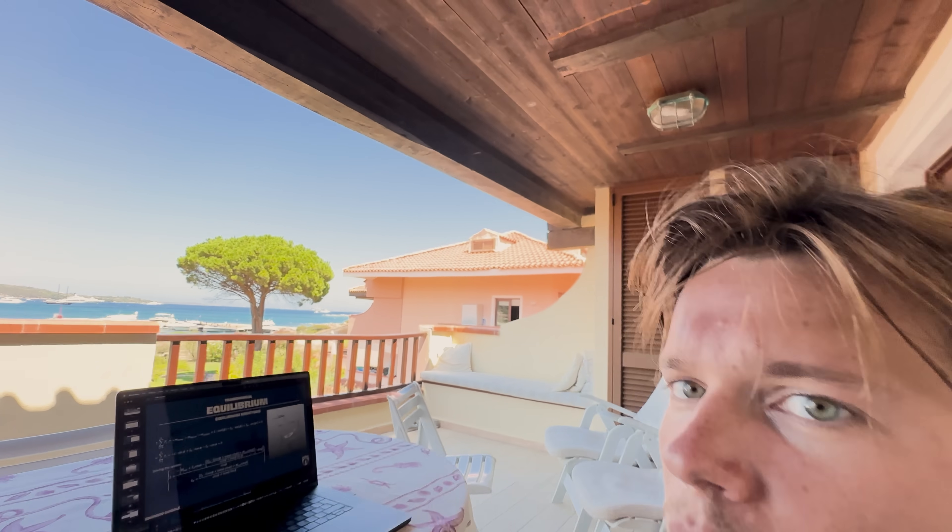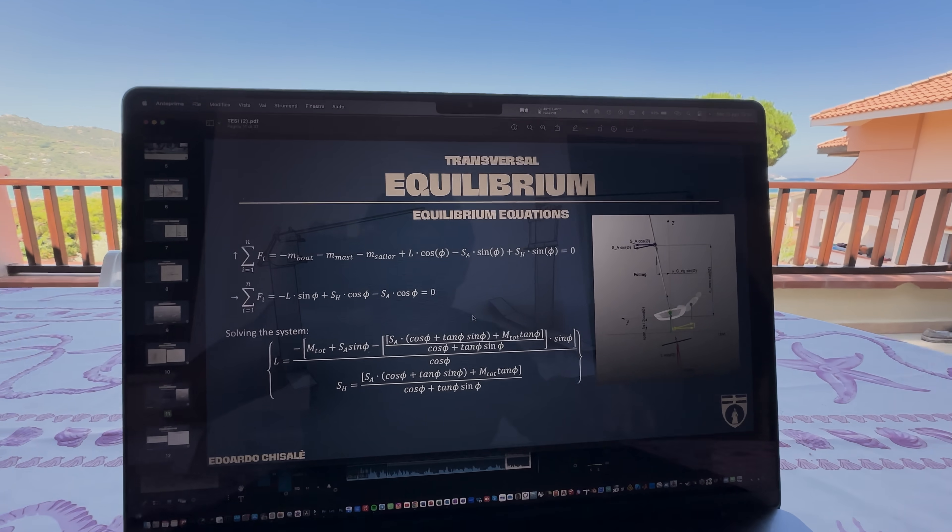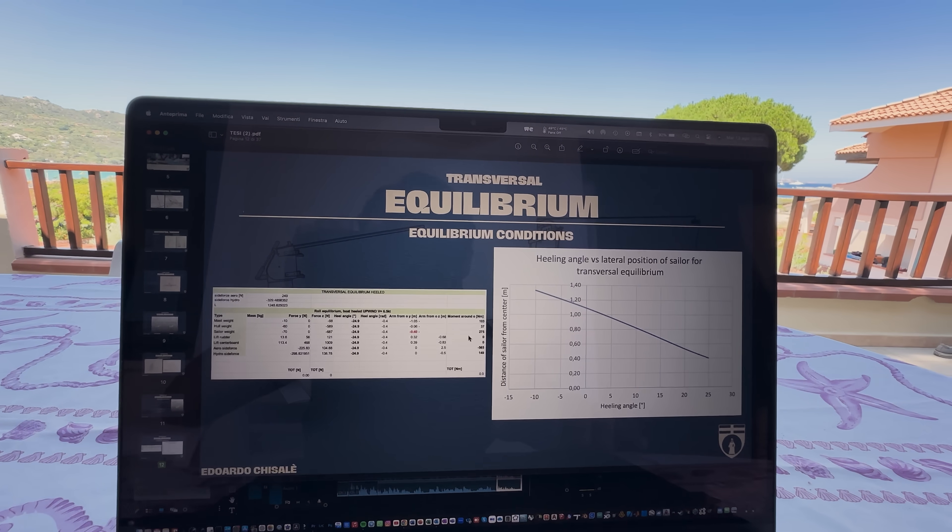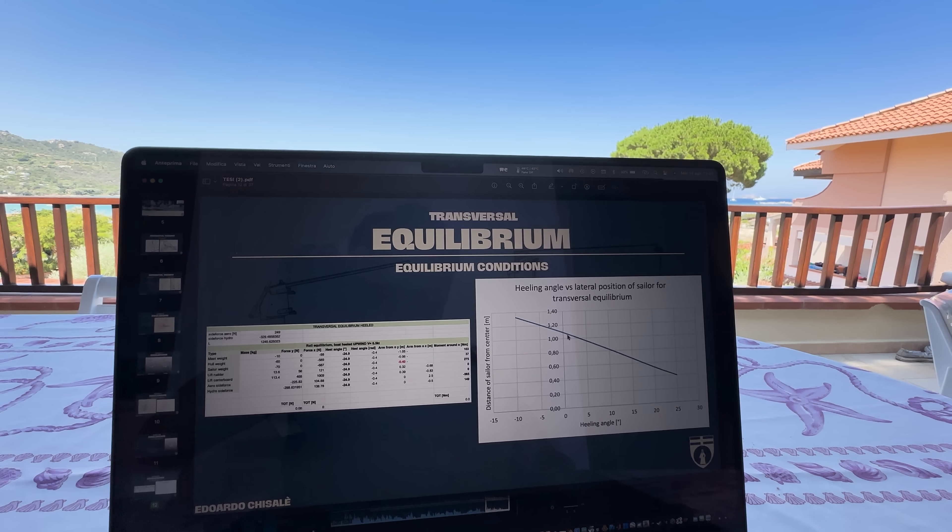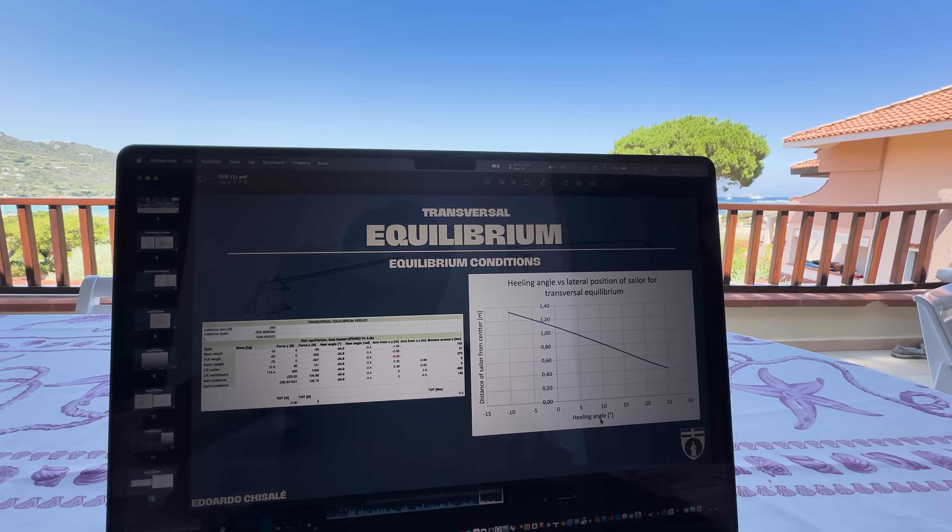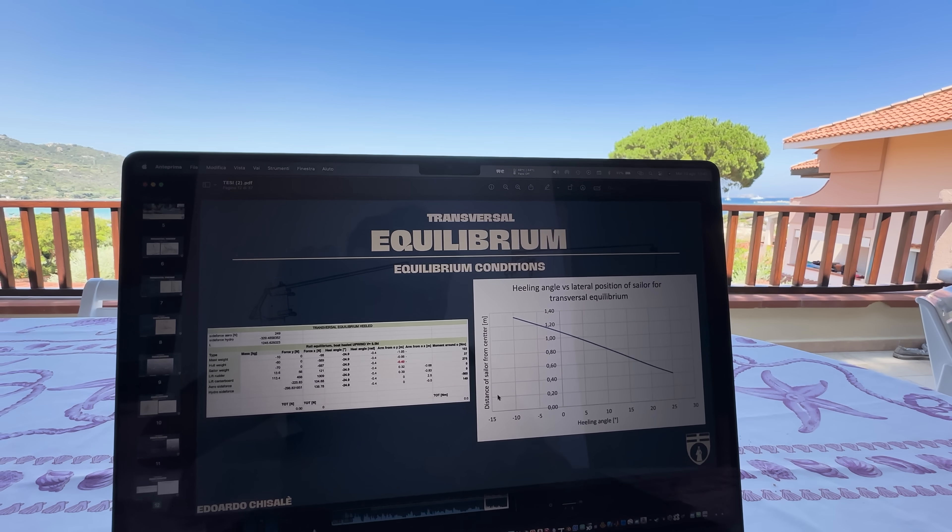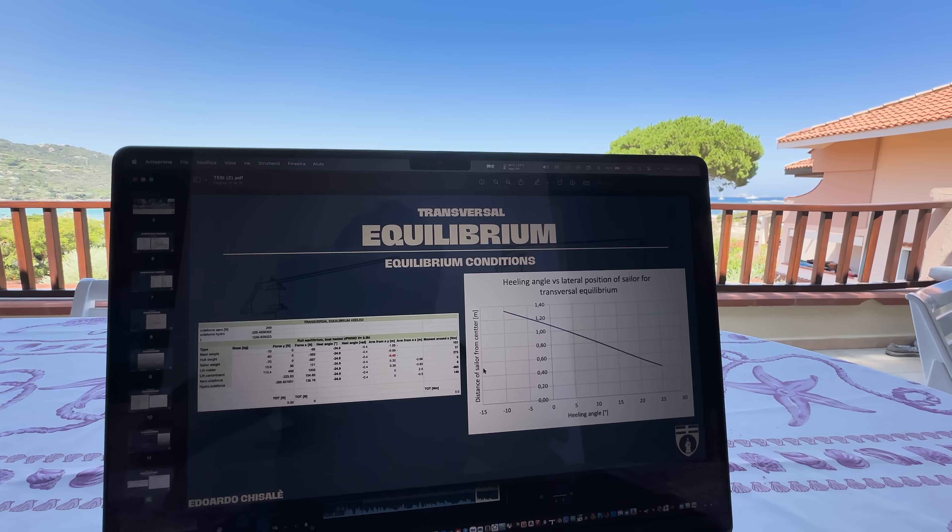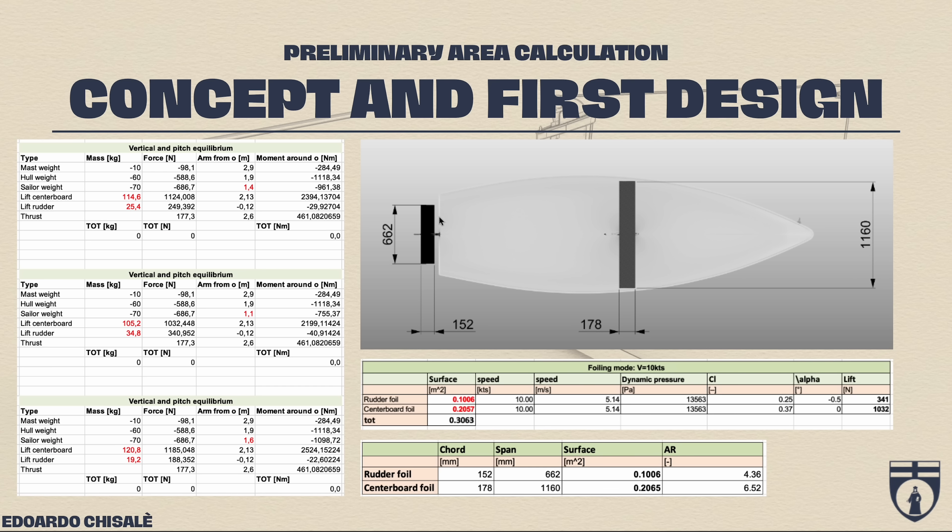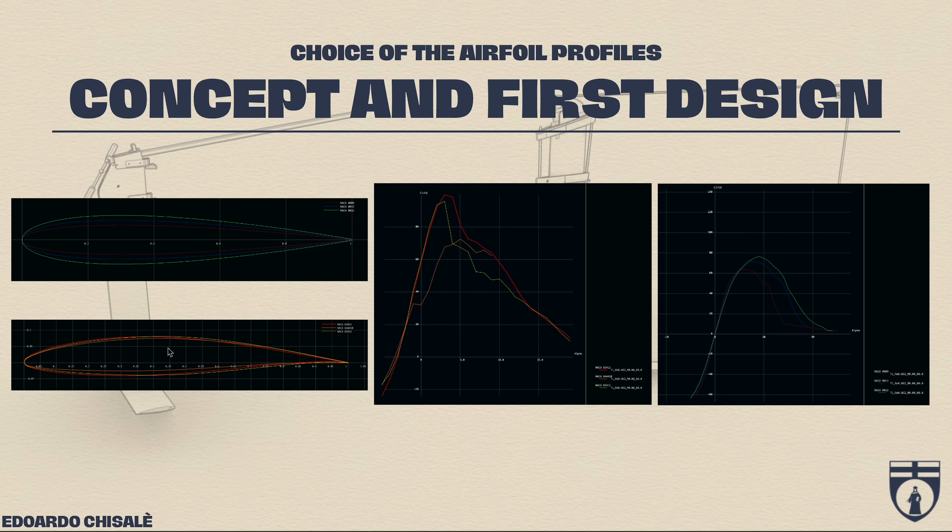If you proceed solving all these beautiful equilibrium equations, you can build a chart that gives you the equilibrium condition in function of the healing angle of the boat and the distance between the sailor and the center of the boat. From the equilibrium achieved, the area of the lifting surfaces can be evaluated and also the wing profiles can be chosen, both asymmetrical profile for the wings and symmetrical profile for rudder and daggerboard.